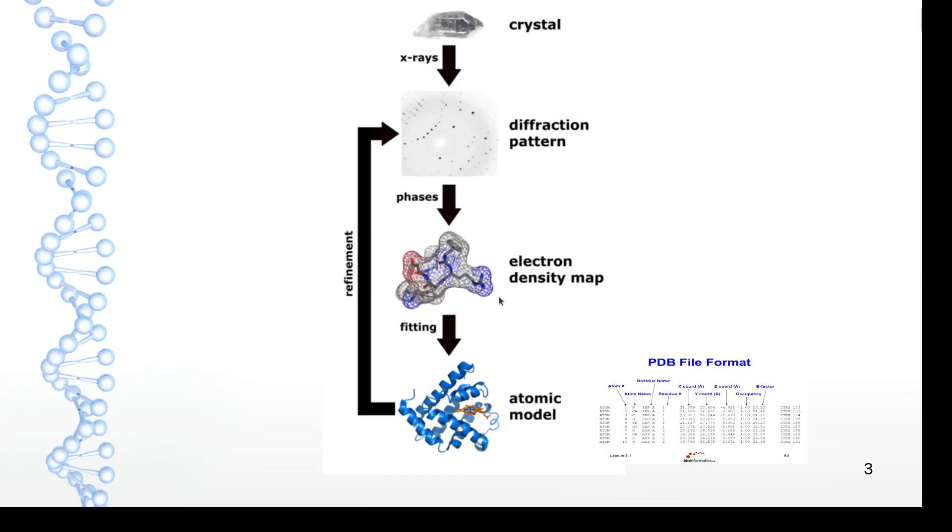Then they do some fitting and refinement, and they end up with an atomic model. As I said, they do refinement multiple times until they are certain or sure about their atomic models. Then they save what they have into a file format, which is the PDB that all of us know.